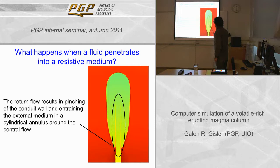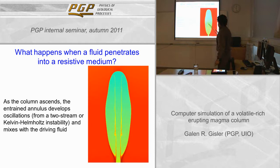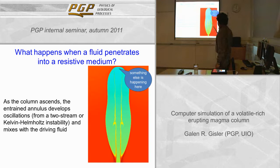Now you've got this strong central flow coming up here. You've got a return flow coming down along the side of the column. So you've got a strong velocity gradient between the sides and the center. The medium in between is then subject to a two-stream Kelvin-Helmholtz instability. You start to get ripple, and then bubbles in this entrained material, and it's clear that you start to get mixing between the entrained material from the external medium and the driving fluid coming in. There's something else going on near the head of the plume — you see the color gradient up here — but I'll save that for a few slides from now.